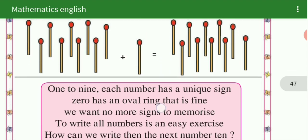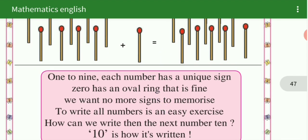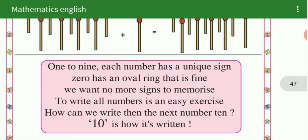1 to 9 each number has a unique sign, 0 has an oval ring that is fine, we want no more signs to memorize, to write all numbers is an easy exercise. How can we write the next number 10? 10 is how it is written. In this way we write 10.